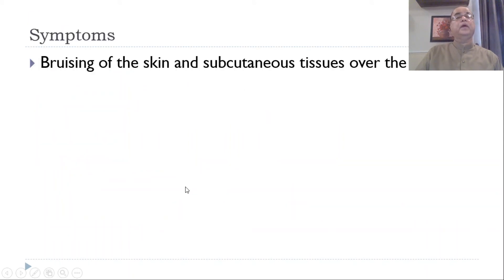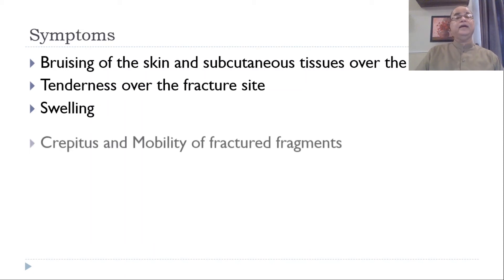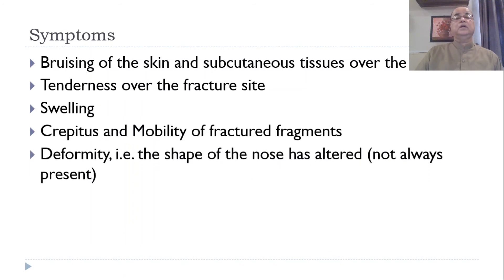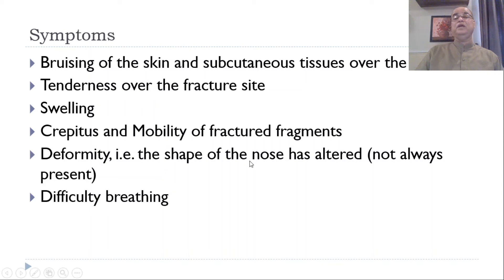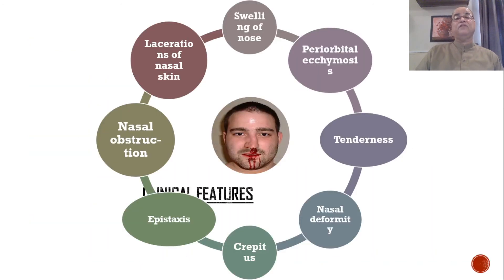On examination, we should look for bruising of the skin and subcutaneous tissue over the nasal bones and along the eyes, tenderness over the fracture site, swelling, crepitus and mobility of fracture fragments, and external or internal deformity. Sometimes, due to acute edema or swelling, the deformity cannot be properly assessed as it may hide the deformity at the time of presentation. We should also ask about nasal obstruction causing difficulty in breathing and excessive epistaxis.